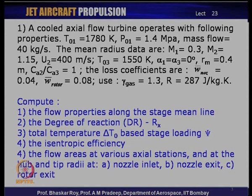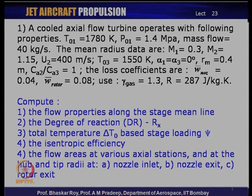T03, the exit temperature from the turbine, is given as 1550 K. The simplistic angular parameters prescribed are alpha_1 equal to alpha_3 equal to 0 degrees, meaning flow comes in and goes out axially — a simplification that is also reasonably realistic. The mean radius is 0.4 meters, representing a medium-sized engine. The actual flow velocity ratio across the rotor, C_A2/C_A3, equals 1, meaning axial velocity across the rotor is conserved — again a simplifying but realistic assumption.